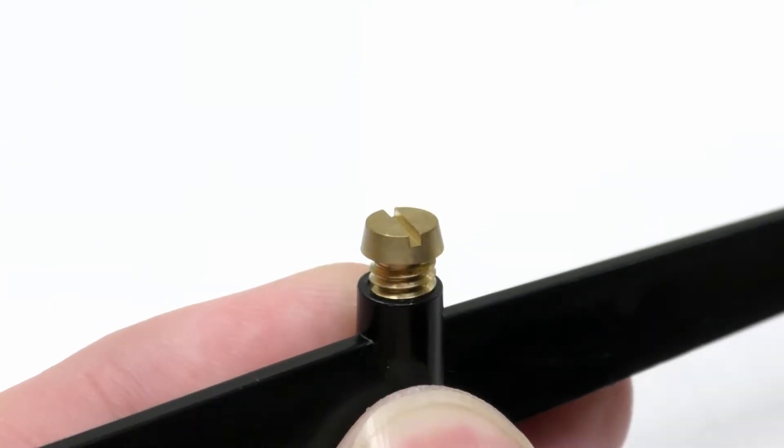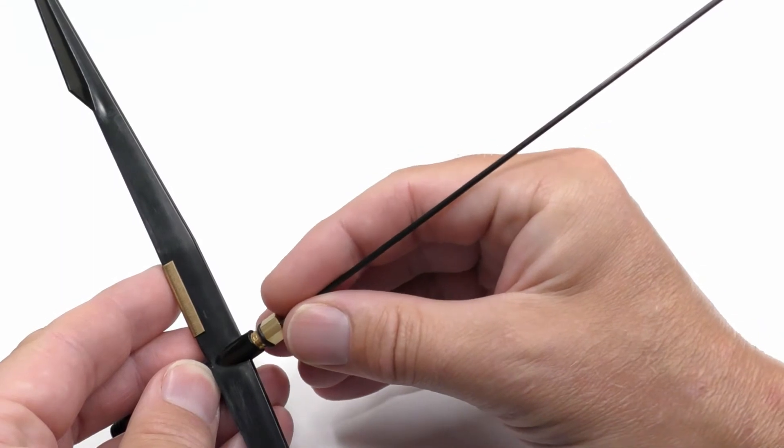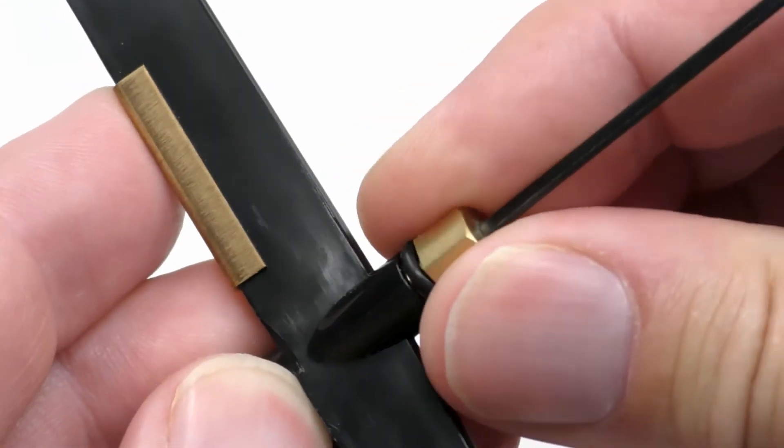Now assemble the bird spike into the tapped hole. Turn the bird spike by hand until the o-ring touches the vein.